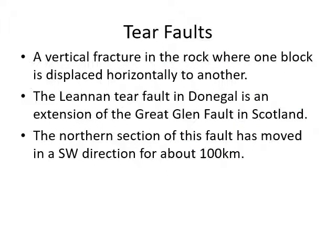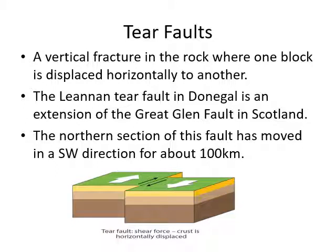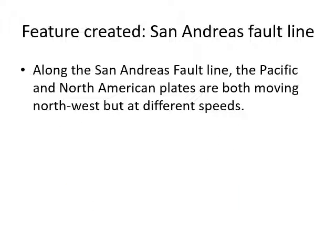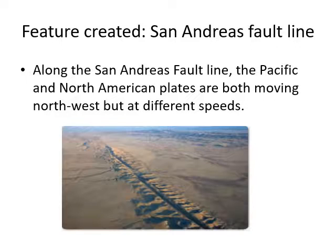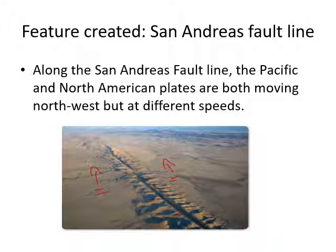Tear faults are the last type we need to discuss. It's a vertical fracture where one block is displaced horizontally to the other. The Lanan Fault in Donegal is part of the Great Glen Fault in Scotland - it's estimated that the section of crust has moved southwesterly for about 100 kilometers. A feature we've studied before is the San Andreas Fault: two pieces of crust moving in the same direction at different speeds, leaving a visible scar along the landscape.